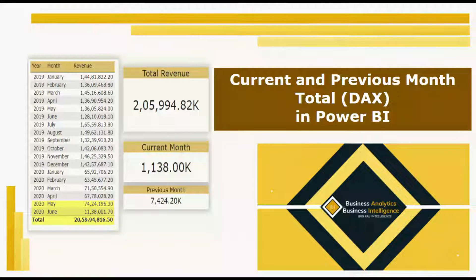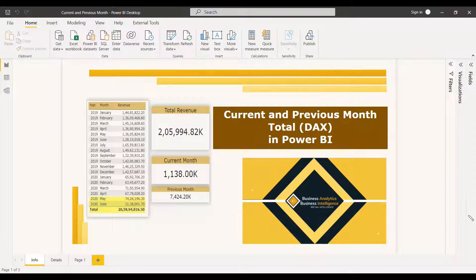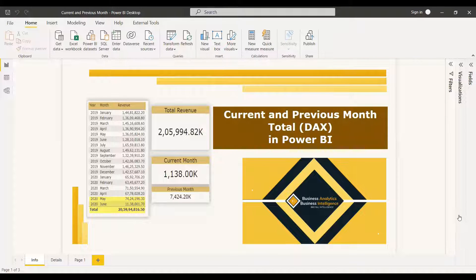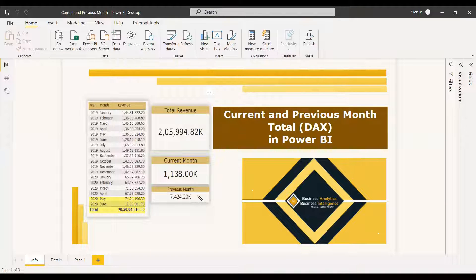Welcome to this new video. This video is about the DAX function for calculating the current and previous month totals. Usually we get the total using DATEADD with an interval, but that works for slicers or table visuals. We need to operate in a card visual and show both the current month total and the previous month total.